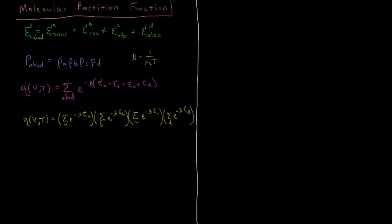Okay. So this is nice because we can calculate each of these factors individually now. And what this allows us to do is see that this total partition function here, q of vt, is equal to a product of four partition functions, q translational, q rotational, q vibrational, and q electronic.